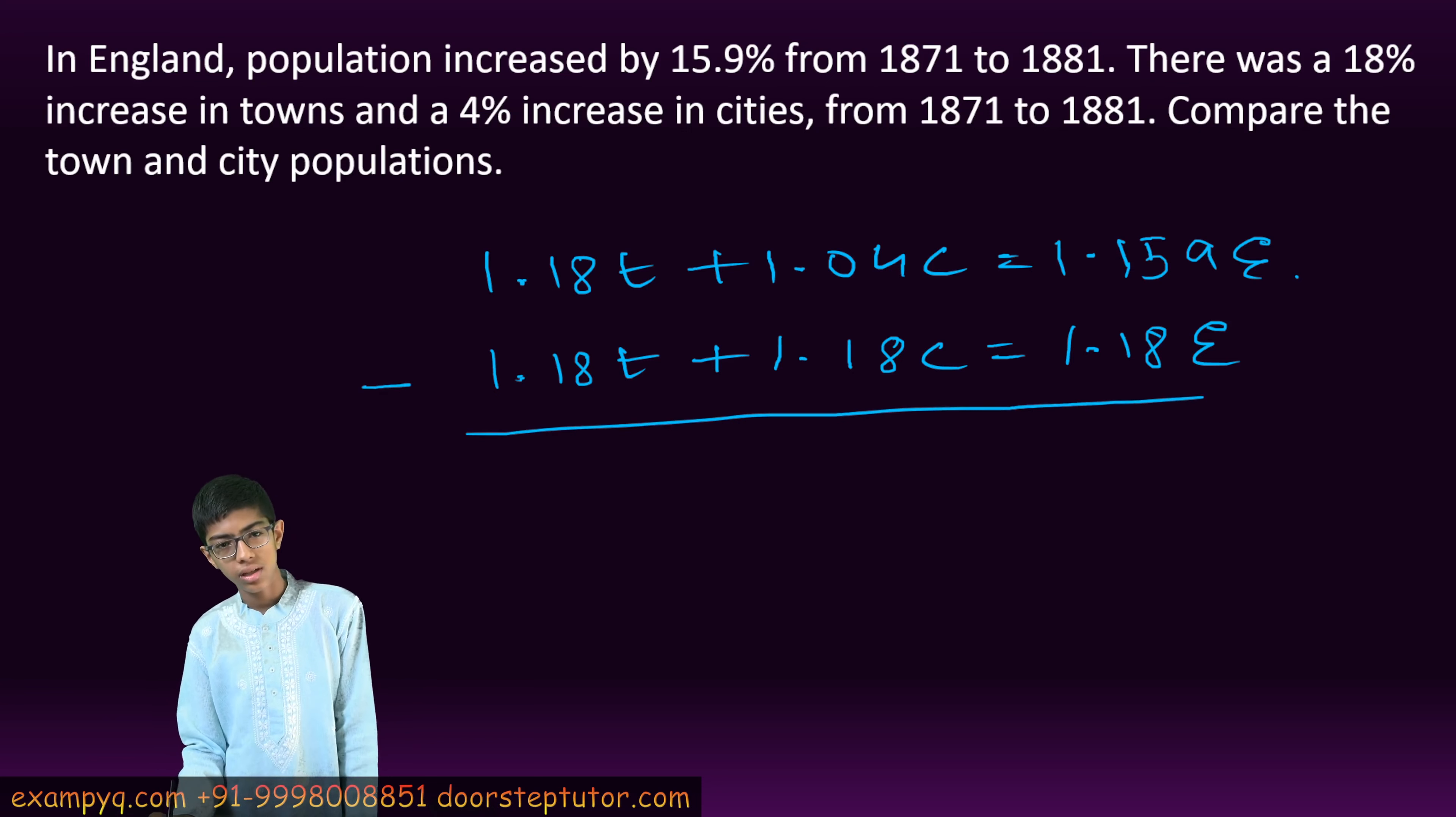By subtraction, we have 0.21E equals minus 0.14C. By multiplying both sides by minus 100, we have 14C equals 21E.